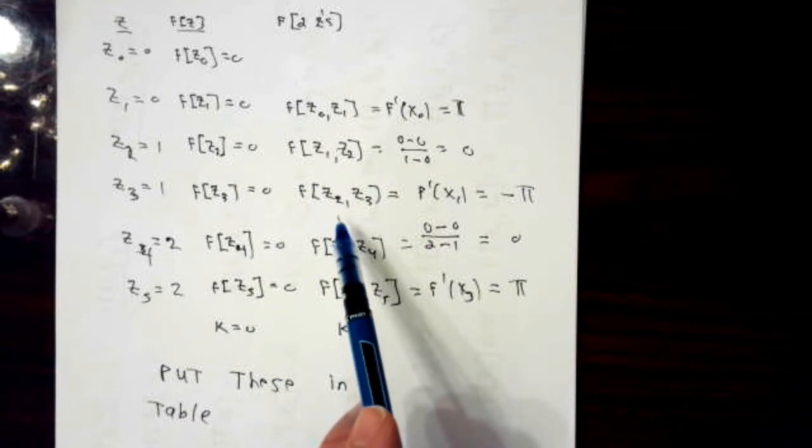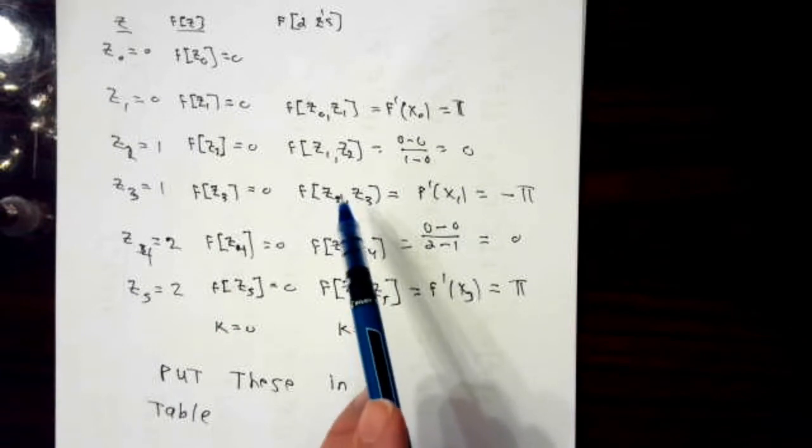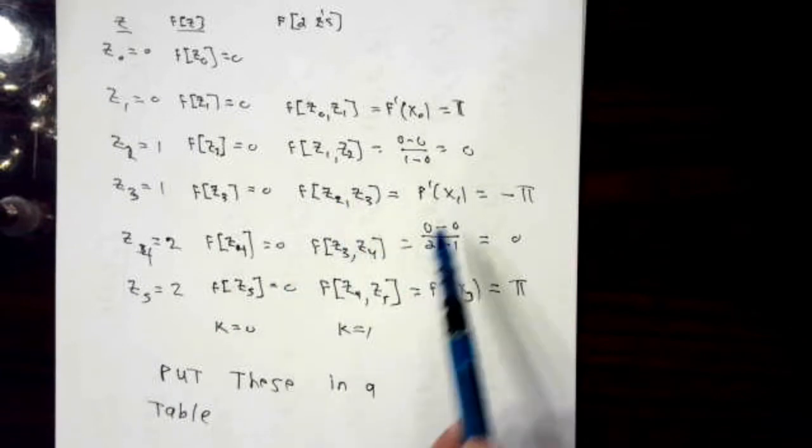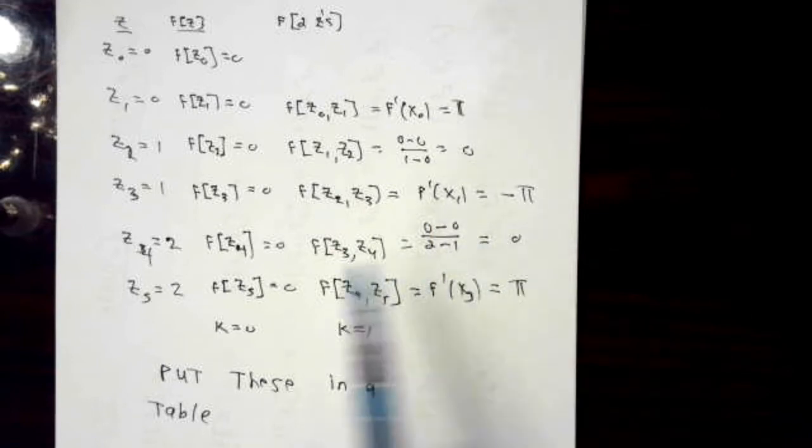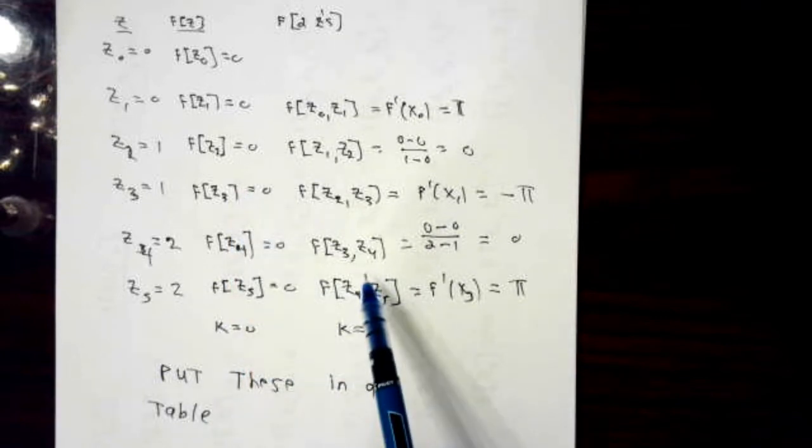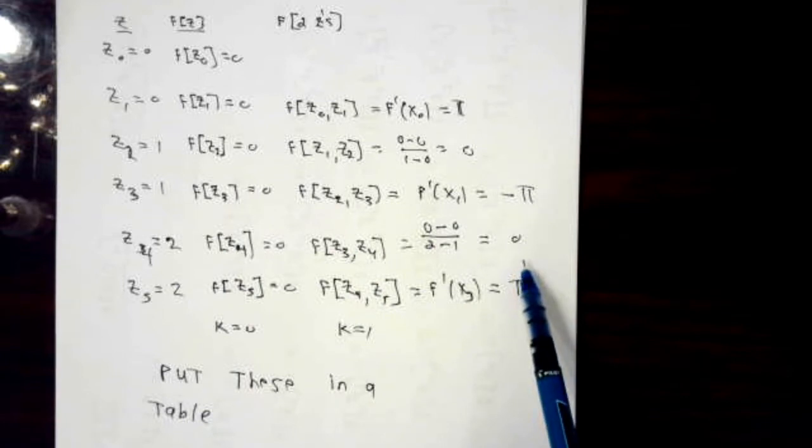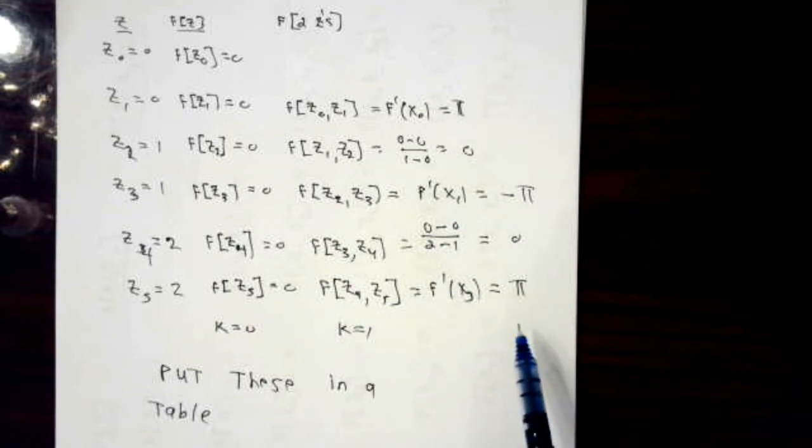This one, if I just tried to use the usual formula, I would get division by 0. So we used the derivative value instead. It's going to be f prime at x1, which was negative π. This one is this number minus this number divided by z4 minus z3, which works out to be 0. And lastly, this should be the last of my derivative values, which was back to π.